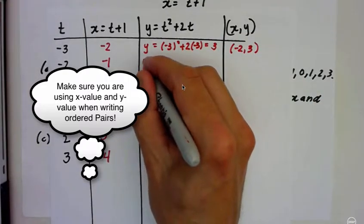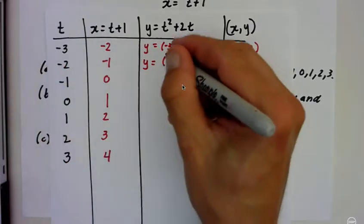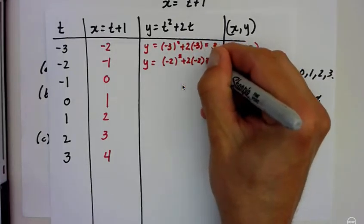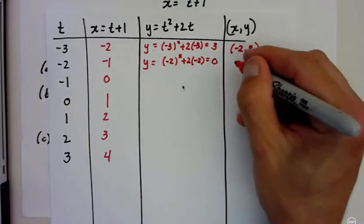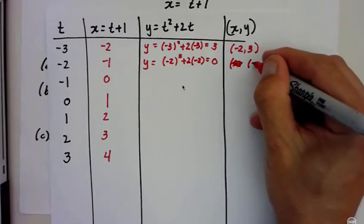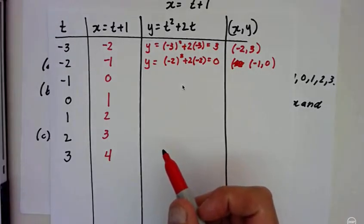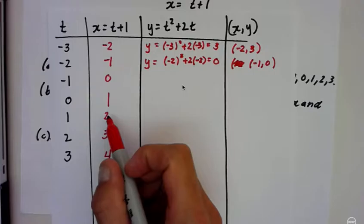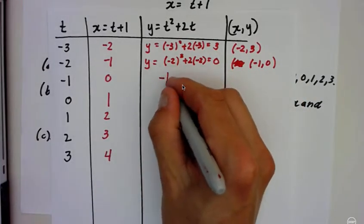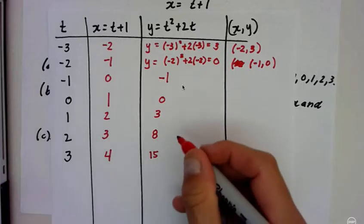To find this y value, you're going to plug in negative two. Be very careful you're not plugging this value, I'm plugging the t values in. So negative two squared plus two times negative two. So that's four plus negative four, which is zero. So we have negative one comma zero. And you do that all the way through. Here's the values I get for y. So I get three, zero. This one is negative one. I get zero here, three here, eight here, and 15.